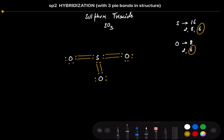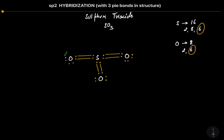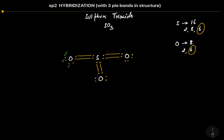Now let's count the number of valence electrons of oxygen after the formation of 2 bonds with the sulfur. The 1st oxygen has attained 8 electrons in its valence shell — that means it has attained the octet.